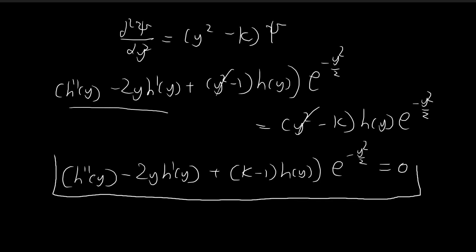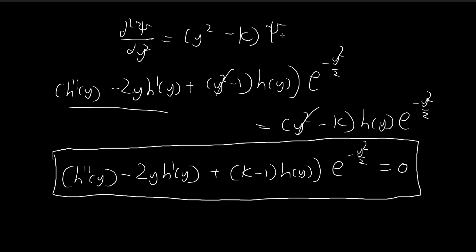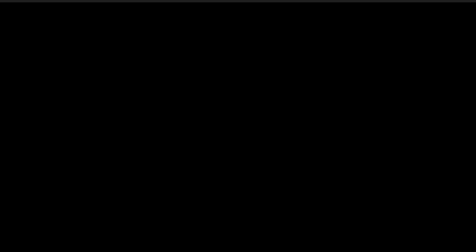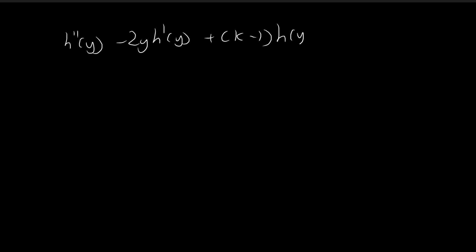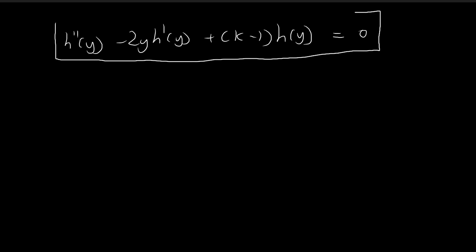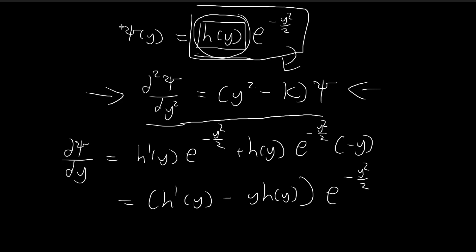In order for this expression to always be true for all values of y, since the Schrödinger equation must always hold, and since the exponential e to the power of negative y squared over 2 is always positive and never zero, the inner expression must equal zero. So we arrive at the new differential equation: h double prime of y minus 2y times h prime of y, plus k minus 1 times h of y equals 0. Solving this will give us h of y, which we can substitute back to obtain our final solution xi of y.